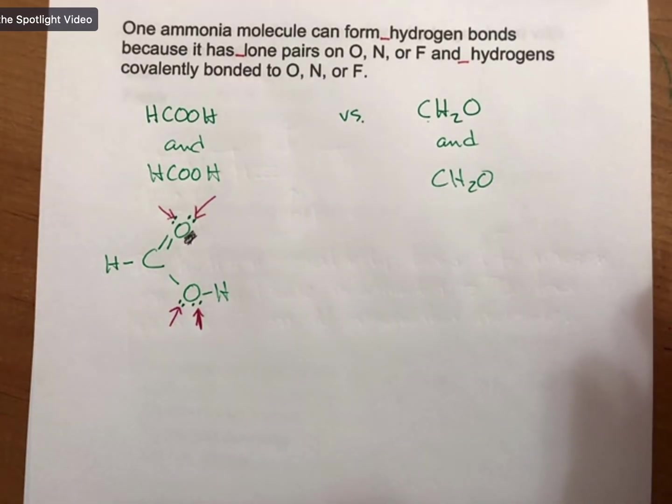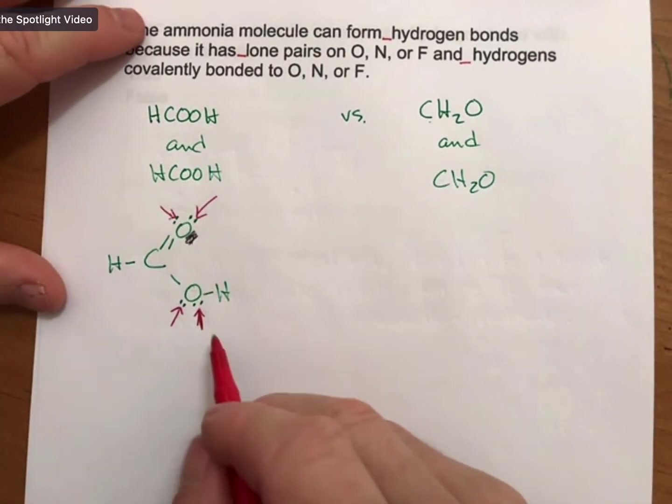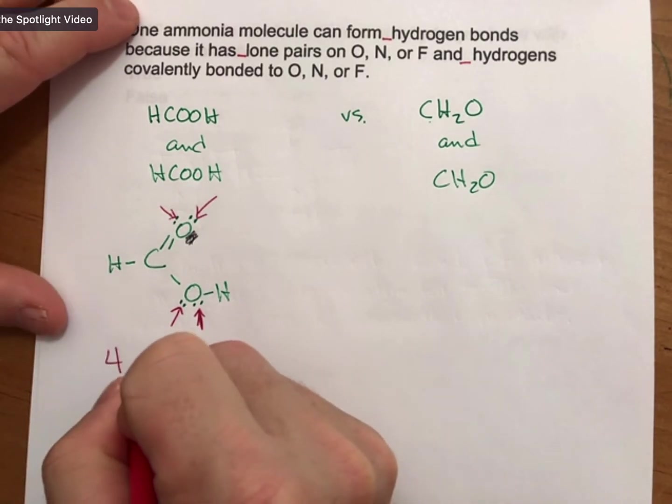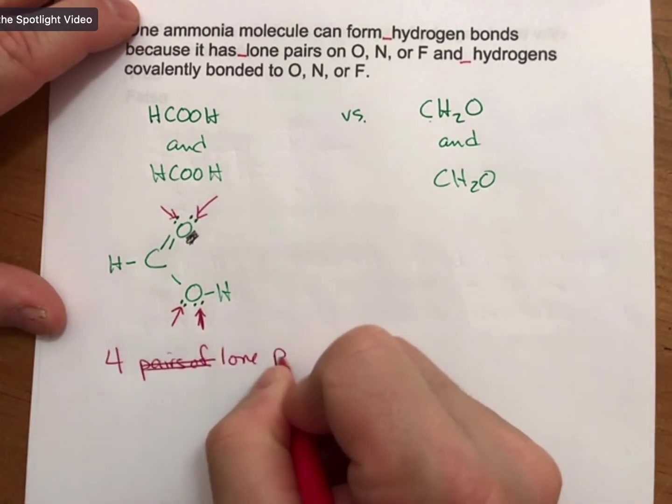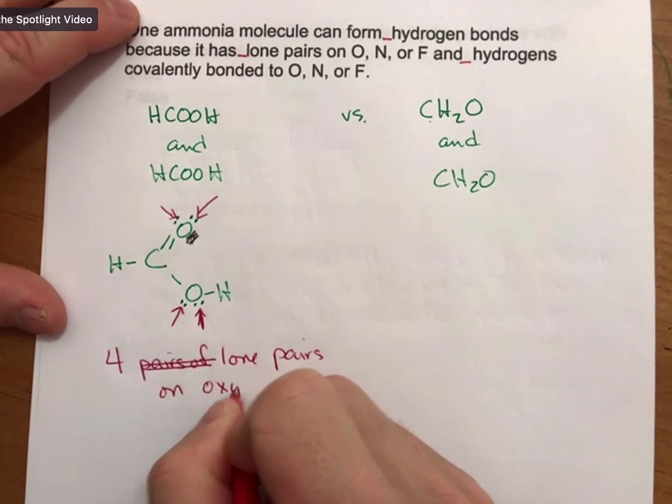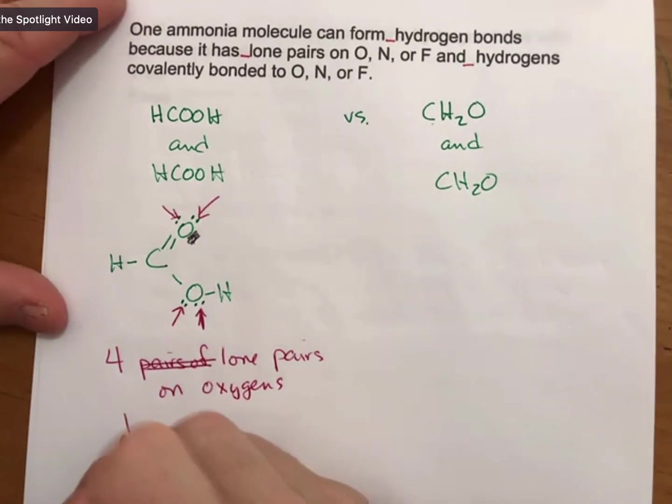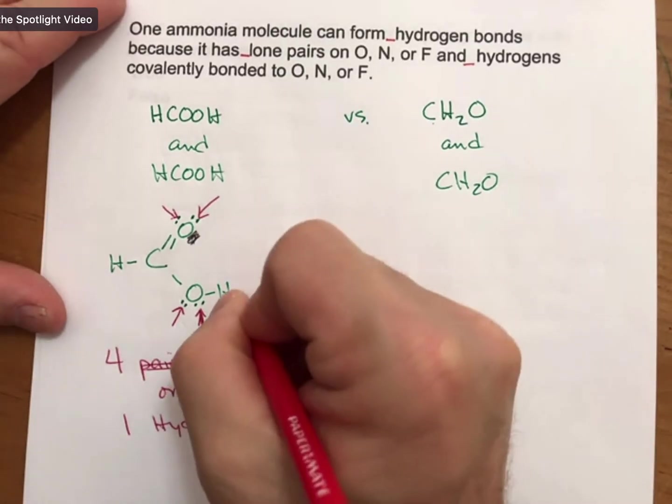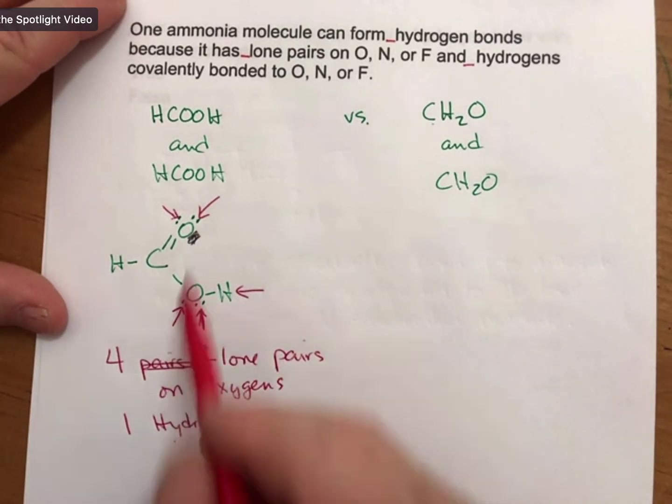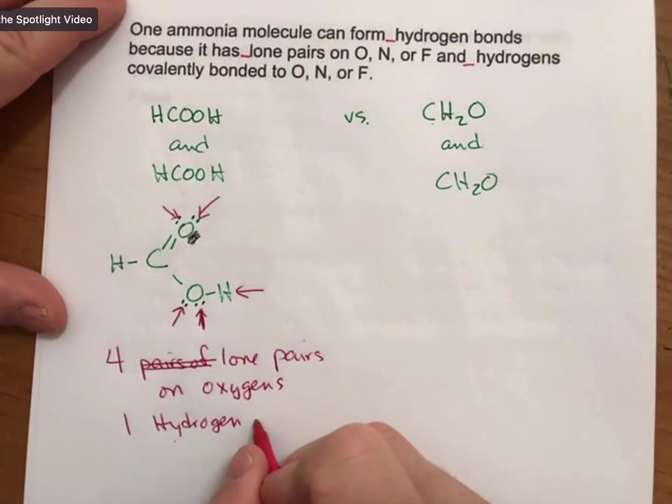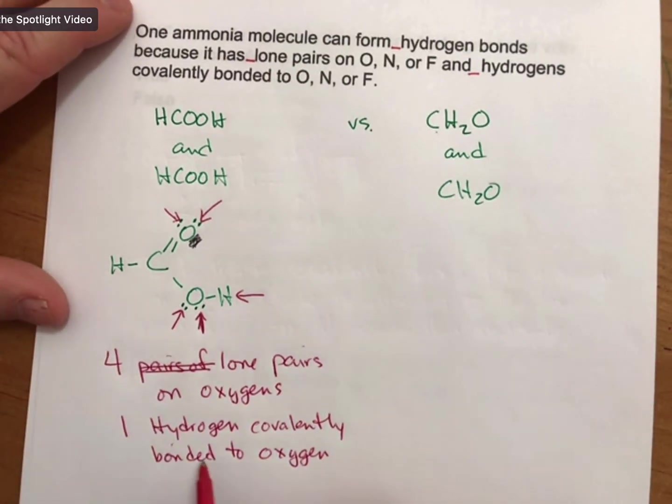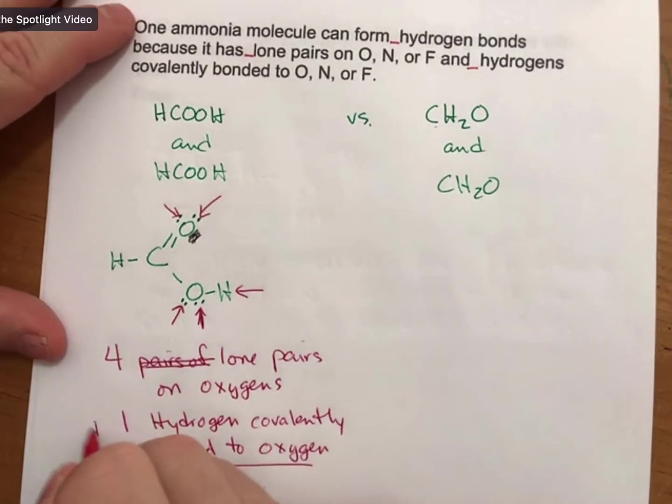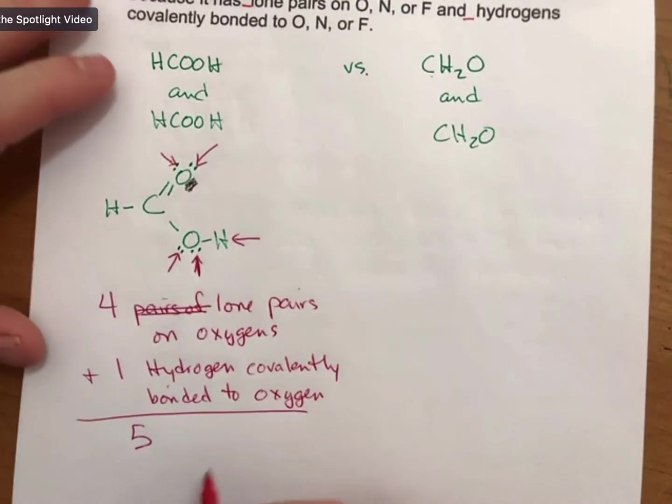One, two, three, four. Let's go with it. It has four hydrogen bonds that it can form. So four lone pairs on oxygens, and one hydrogen. That's the one right here. One hydrogen covalently bonded to oxygen. Which means that it can form, you add these up, and it can form possibly five hydrogen bonds.